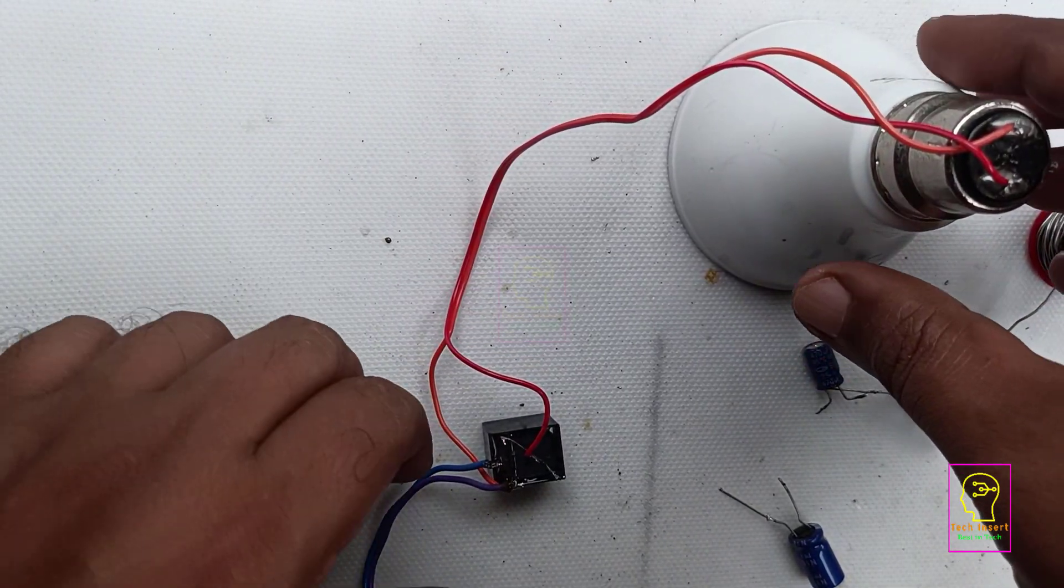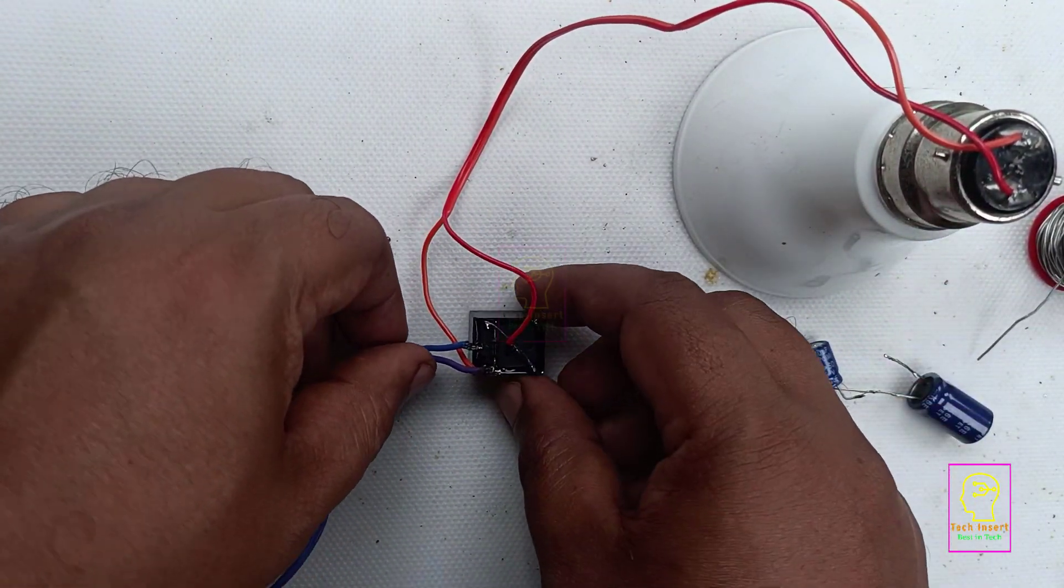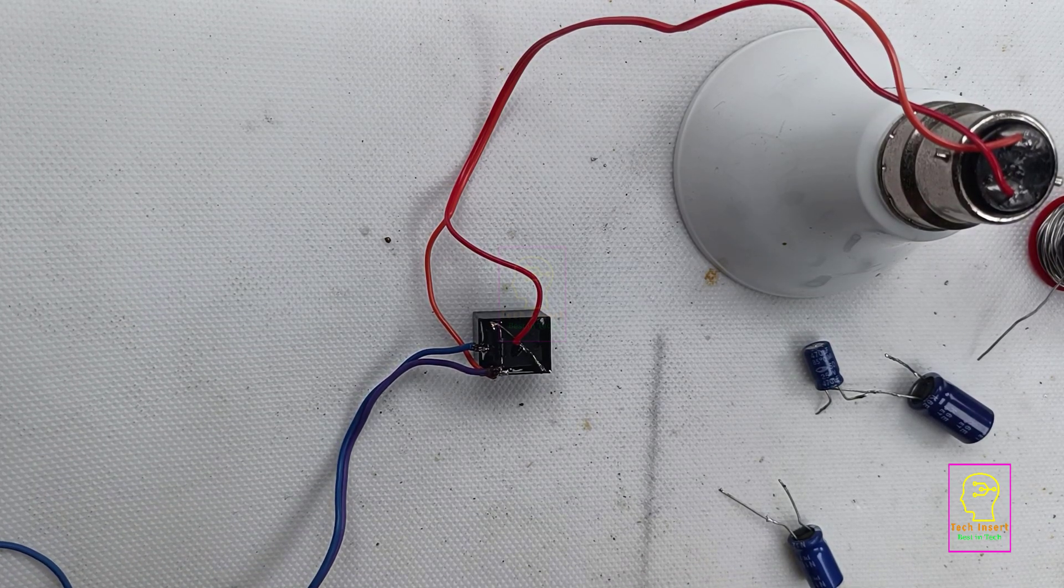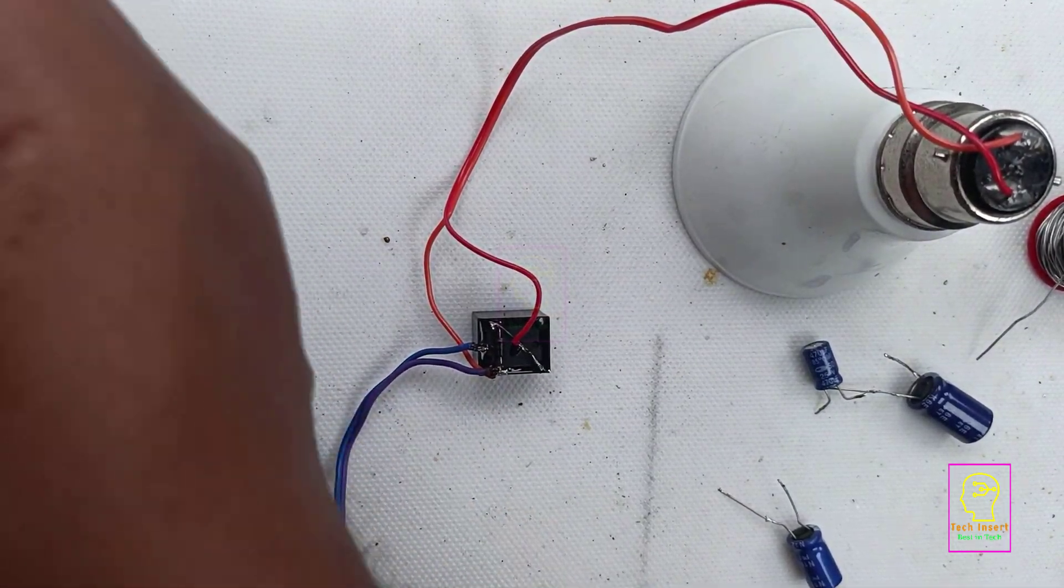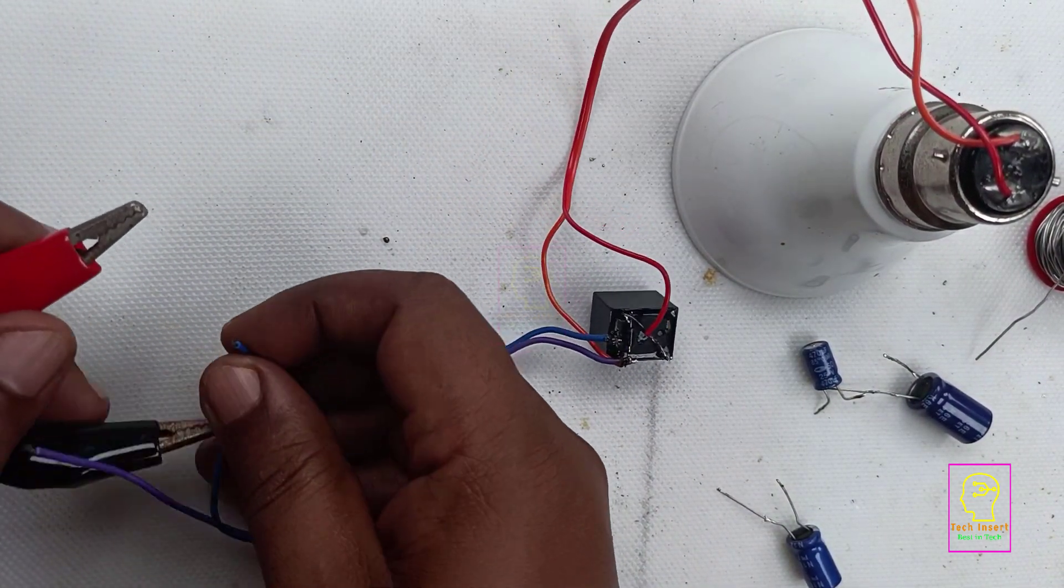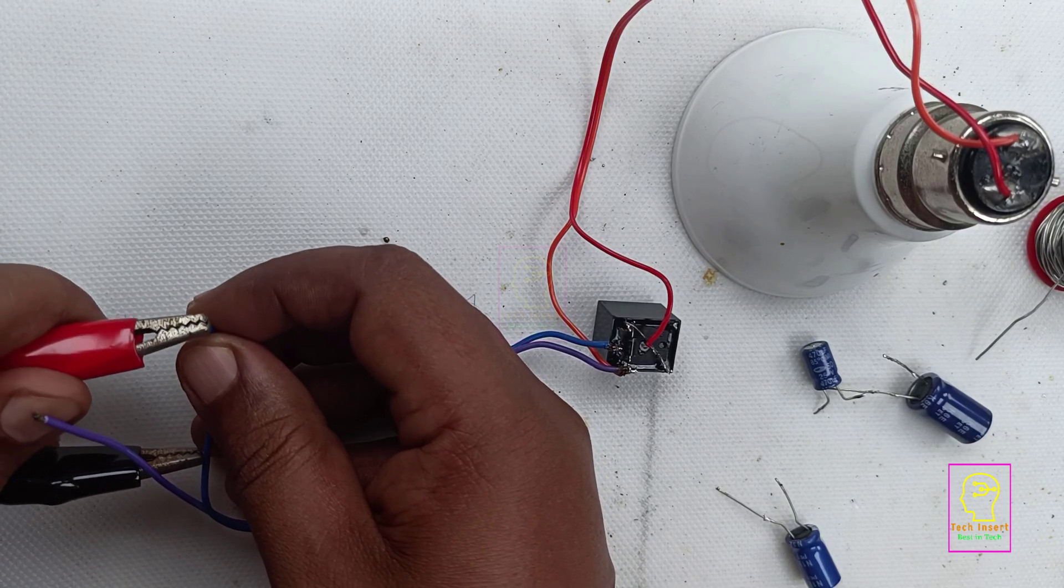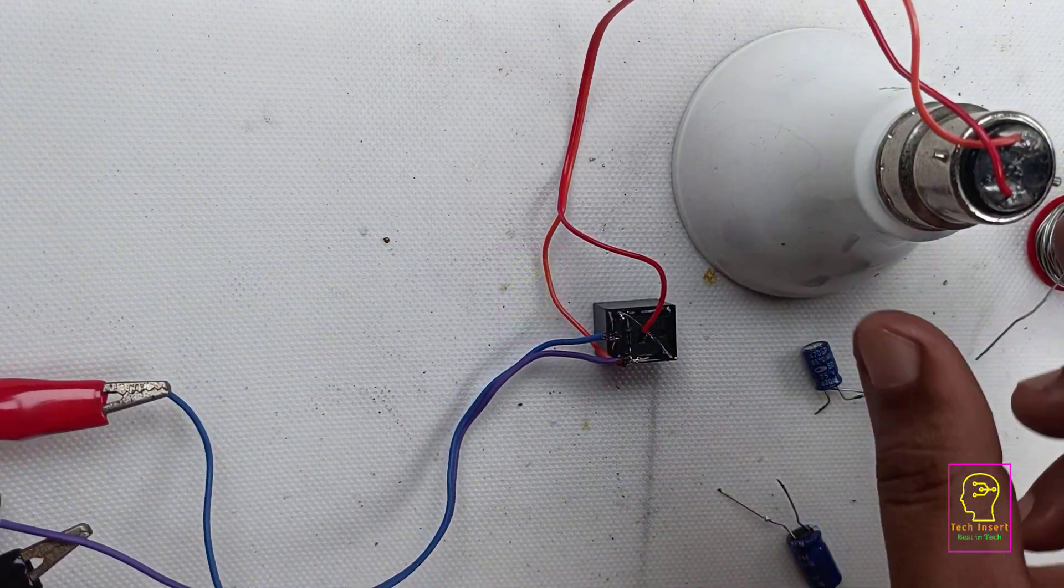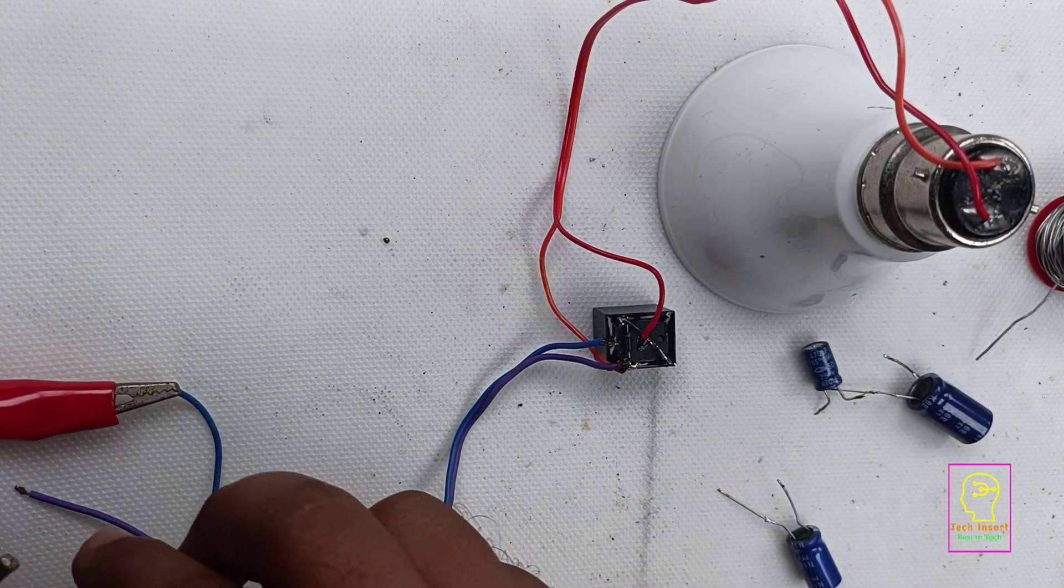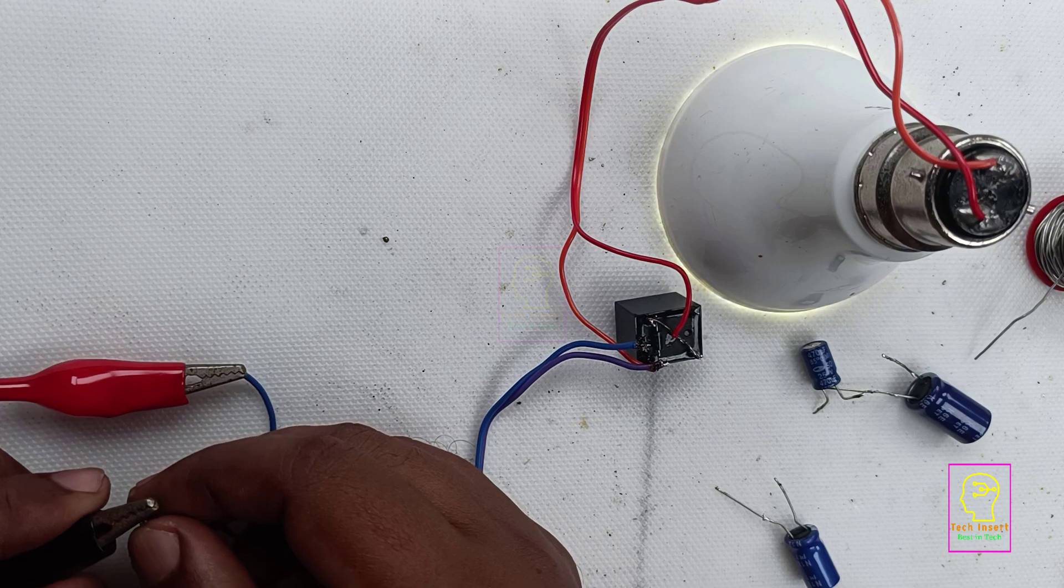For the time being I have not connected any capacitors to the circuit. Before that we will test this circuit without the capacitor. I am giving a 12 volt power supply to this circuit. Please note that I have not connected any other components to this circuit other than the flyback diode. When I am connecting the power supply, please listen to the sound of the relay carefully and also watch the load.